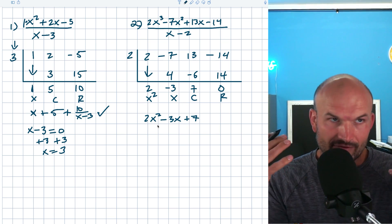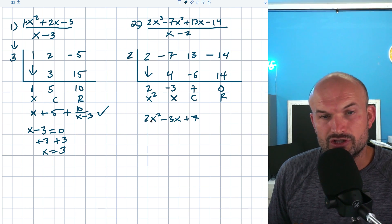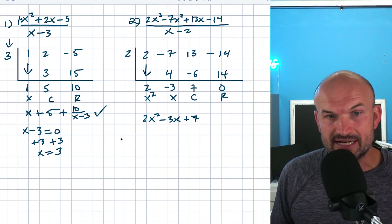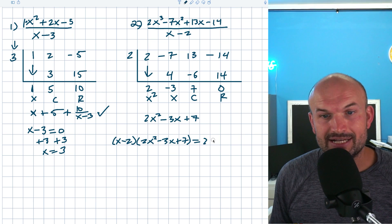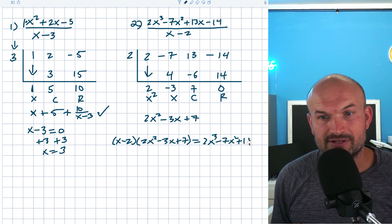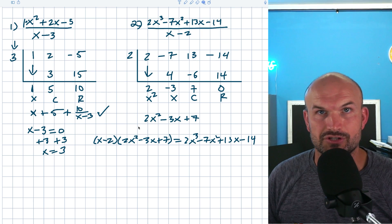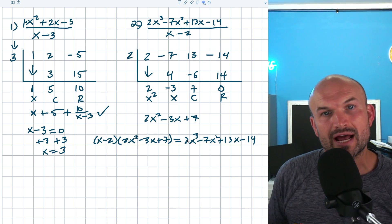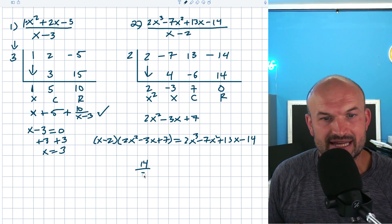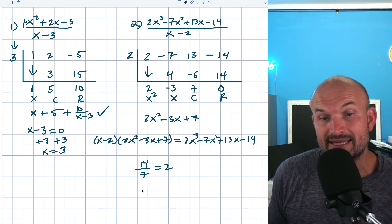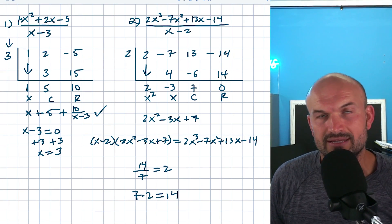One last thing to highlight that's really important for later content: if X minus two evenly divides into the polynomial 2X squared minus 3X plus seven, that also tells us that X minus two times 2X squared minus 3X plus seven equals 2X cubed minus 7X squared plus 13X minus 14. So you can rewrite it as a product — just like 14 divided by seven equals two, and seven times two equals fourteen. The same idea applies here with the polynomials.